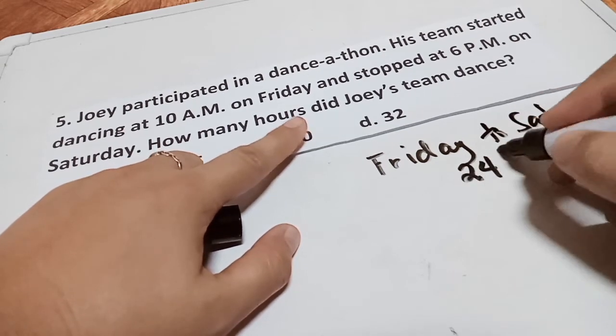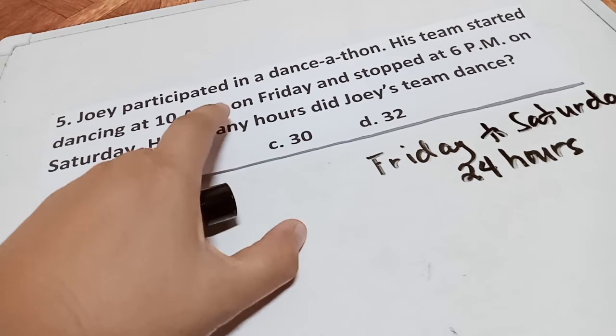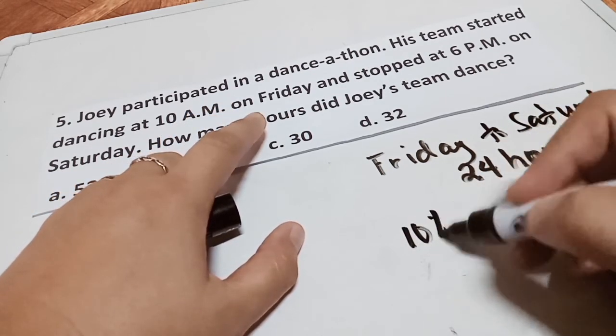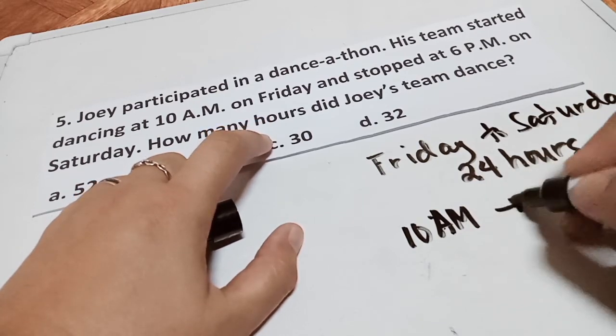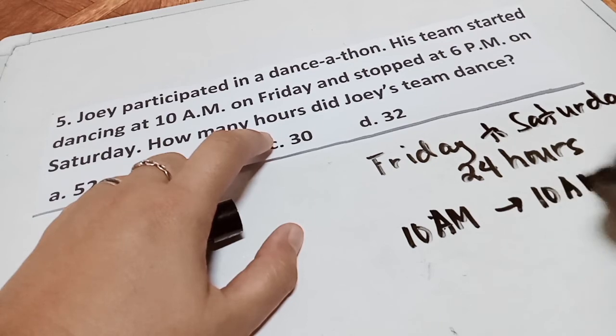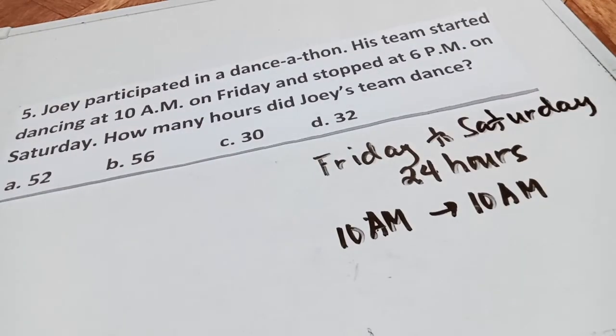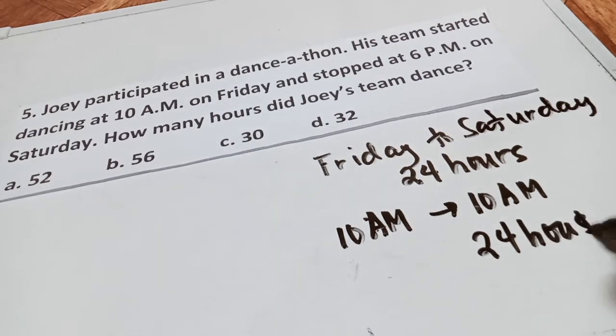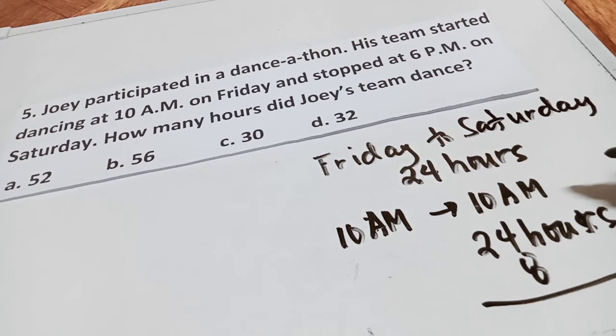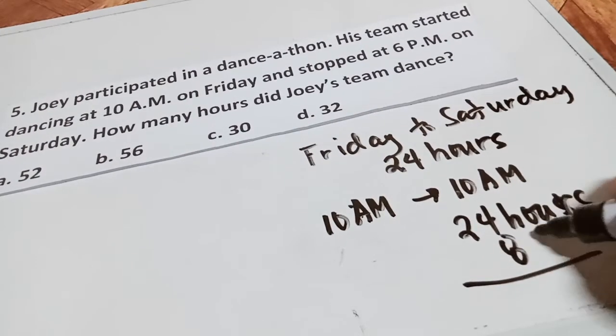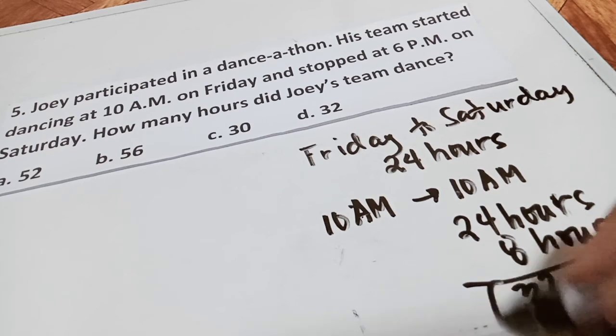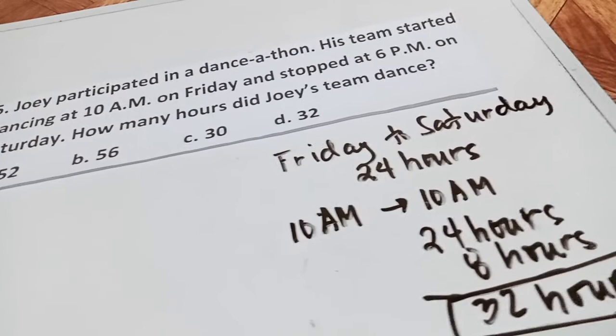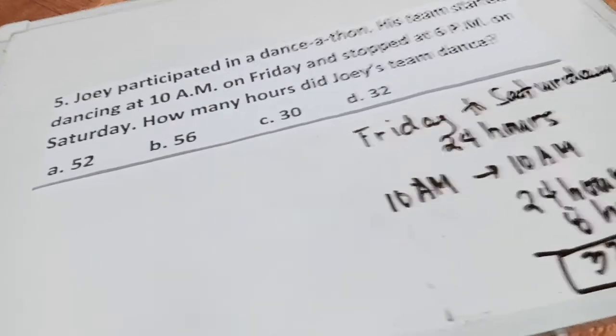This is already 24 hours. This will start from the 10 a.m. and ends to 10 a.m. in Saturday. And then 10 a.m., 10, 11, 12, 1, 2, 3, 4, 5, 6. We need to add 24 hours and add with 8. This is from 10 a.m. to 6 p.m.: 11, 12, 1, 2, 3, 4, 5, 6. The answer is 32. This will be our final answer. The best answer is letter D. That is the answer for number 5.